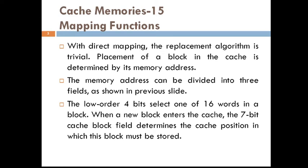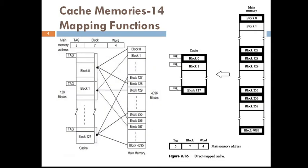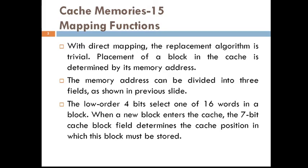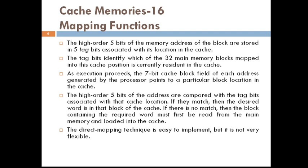How is the placement of a block in the cache determined? It is determined from the memory address. The memory address is divided into three fields, as shown in figure 5.15: tag, block, and word. The lower-order 4 bits select one of the 16 words in a block. When a new block enters the cache, the 7-bit cache block field determines the cache position in which this block must be stored. The higher-order 5 bits of the memory address are stored in the 5 tag bits associated with its location in the cache.